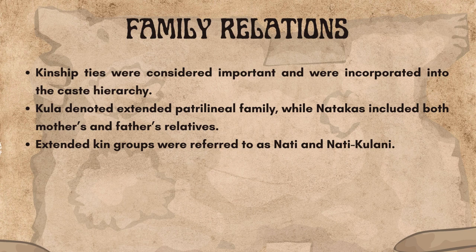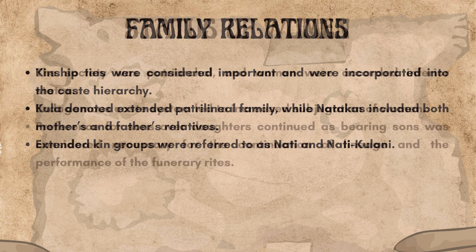Now let us look at family relations. Kinship ties were considered important and were incorporated into the caste hierarchy. Kula denoted the extended patrilineal family, while Natakas included both the mother's and father's relatives. Extended kin groups were referred to as Nati and Nati Kulani.